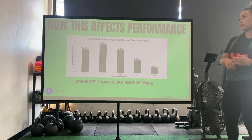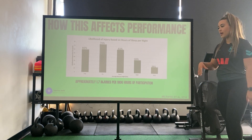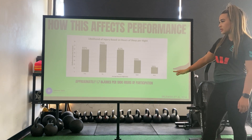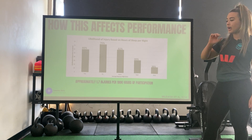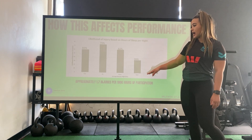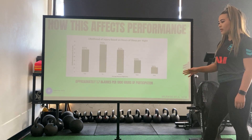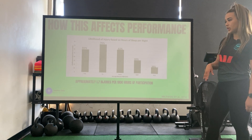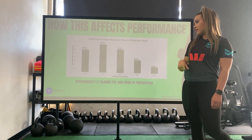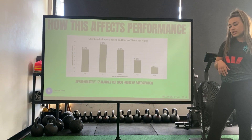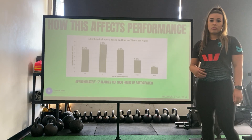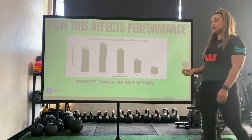Looking at how this affects performance in a graph format: from five to nine hours of sleep, you can see how likely you are to get injured. The more hours of sleep you get, the less likely you are to be injured. Under seven hours you're at a 1.7 chance in a thousand. At five hours you've got about 60%, six hours 70%, seven hours 62%, eight hours 35%, and nine hours 18%. Optimal sleep depends on every individual and how you set yourself up for the best sleep routine.